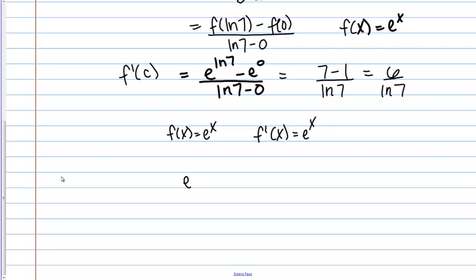So I want to find the point, the value where E to the X equals 6 over ln 7. So now I just need to solve this relationship for X. Okay, so I have E to the X, X is in the exponent. So how can I actually solve this expression for X?